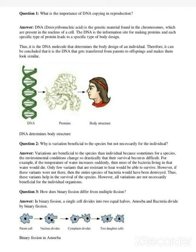DNA gets transferred from parents to offspring. It is transferred by means of gametes, and that is why offspring look similar to their parents. As shown in the diagram, DNA forms proteins, and proteins give you the body structure. That is why DNA copying is of great importance in organisms.